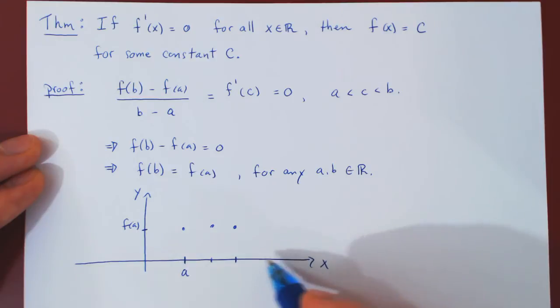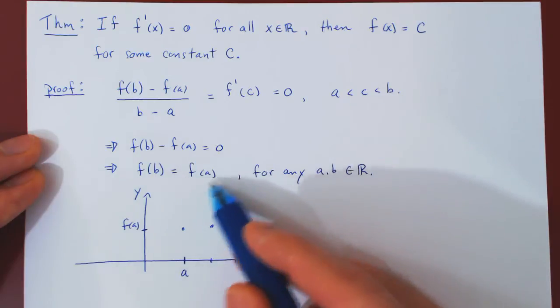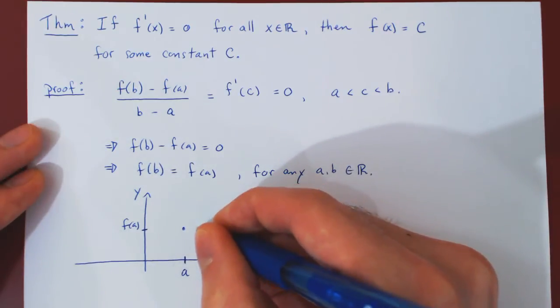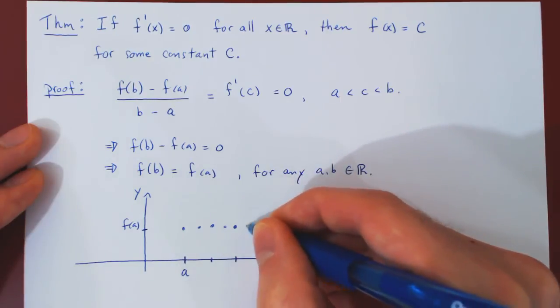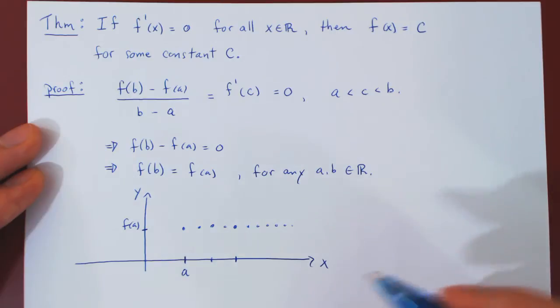So no matter how you vary b onto the real line, the y value at b, f of b is always the same as the y value at a. So the y value is always the same for any choice of b.